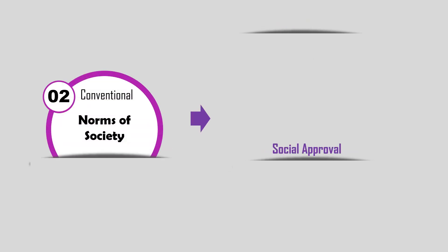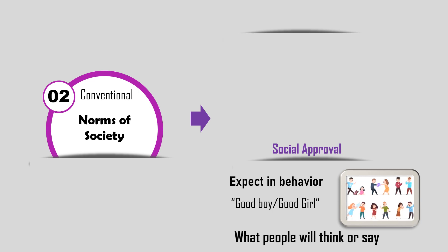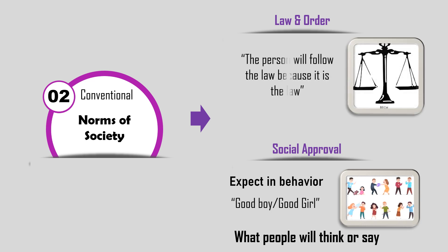Stage 3 is Social Approval. One is motivated by what others expect in behavior, like being a good boy or good girl. The person acts because he or she values how he or she will appear to others, giving importance to what people will think or say. Stage 4 is Law and Order. One is motivated to act in order to uphold law and order; the person will follow the law because it is the law.